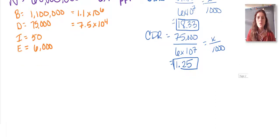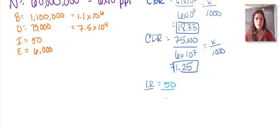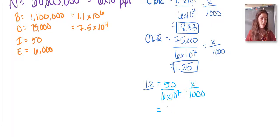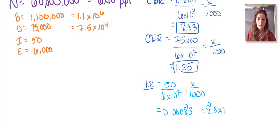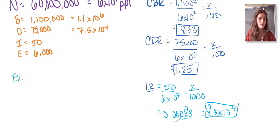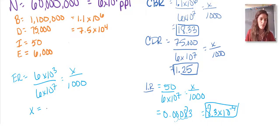Now calculate immigration and emigration rates. For immigration: 50 people out of 60 million equals x out of 1,000 — immigration rate ≈ 0.00083 (or 8.3 × 10⁻⁴), which is a very small number. For emigration: 6,000 out of 60 million (6 × 10⁷) equals x over 1,000 — emigration rate = 0.1.